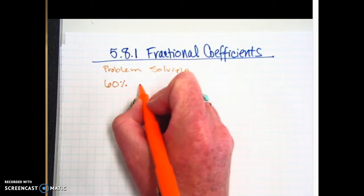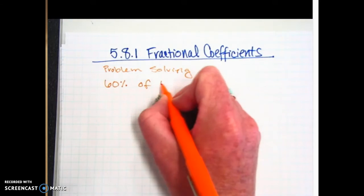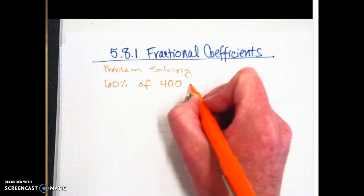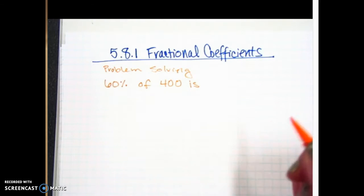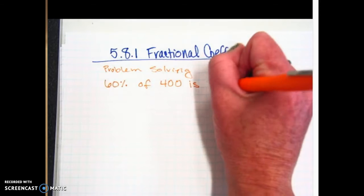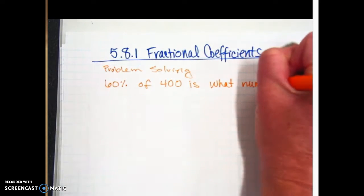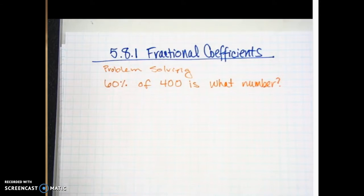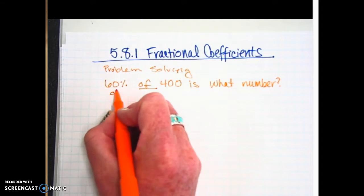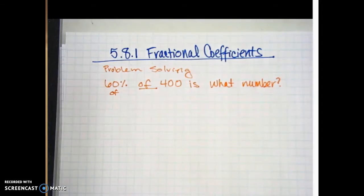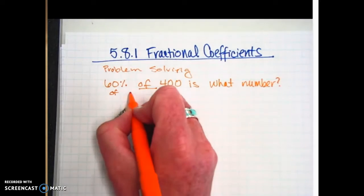where it says 60% of 400 is what number? And then you have to change it into a math equation or math sentence. So you have some key words, like 'of'. What does 'of' mean you should do? Multiply.